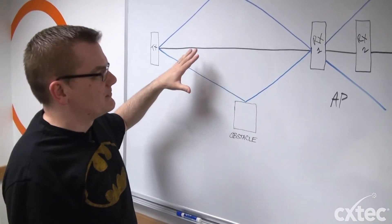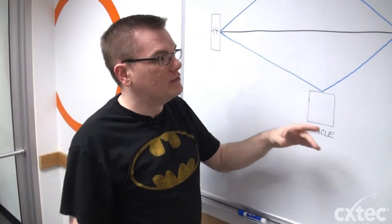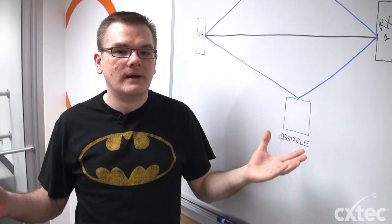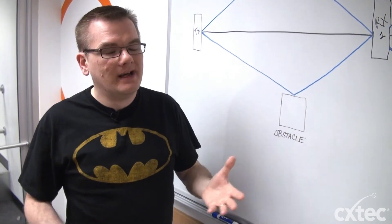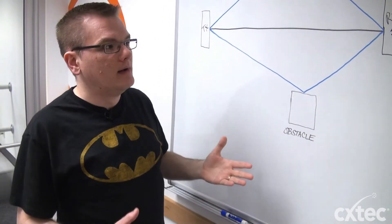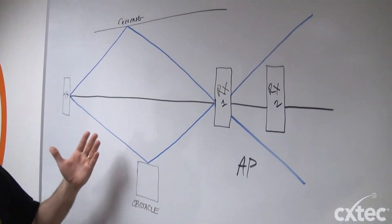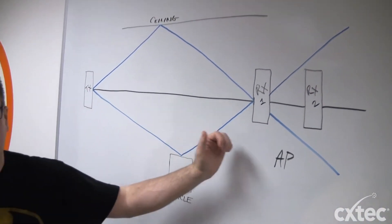We have a number of customers who used to believe that what they could do is take these two antennas and separate them by large distances in two different rooms just to spread coverage. It's really not what diversity is for. Diversity is to keep those antennas close together so that you can make sure that you maintain a great connection from your transmitters to your receivers.